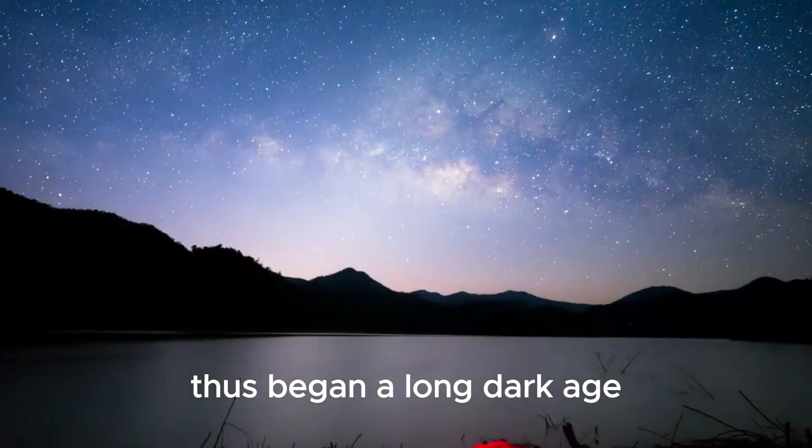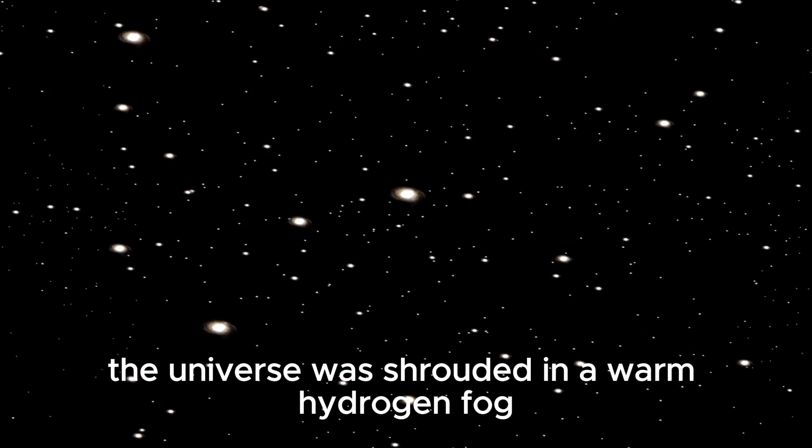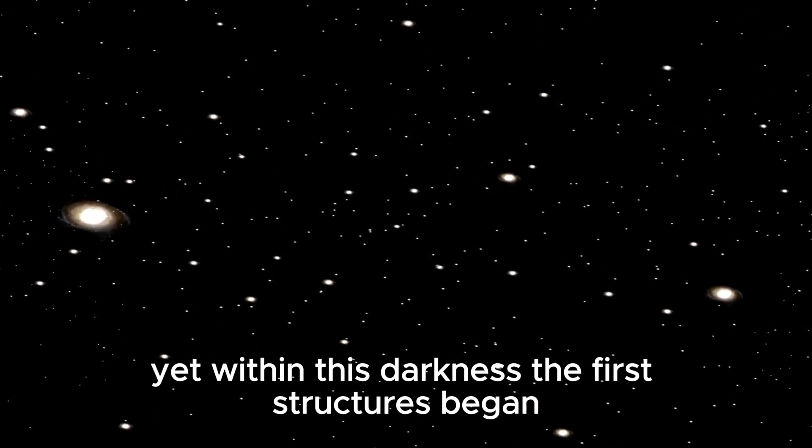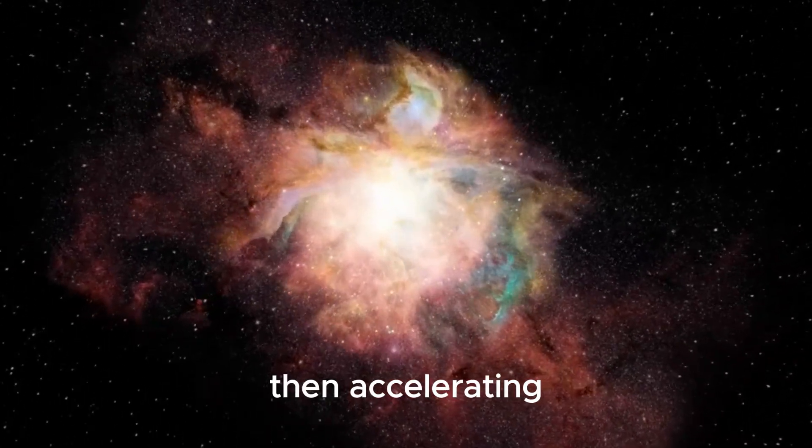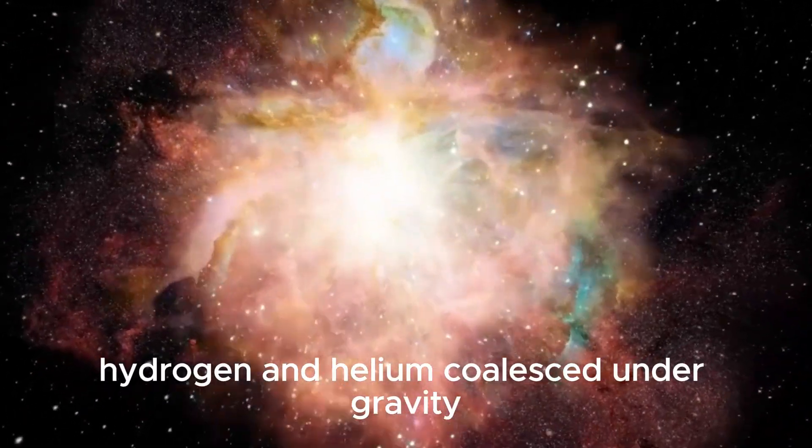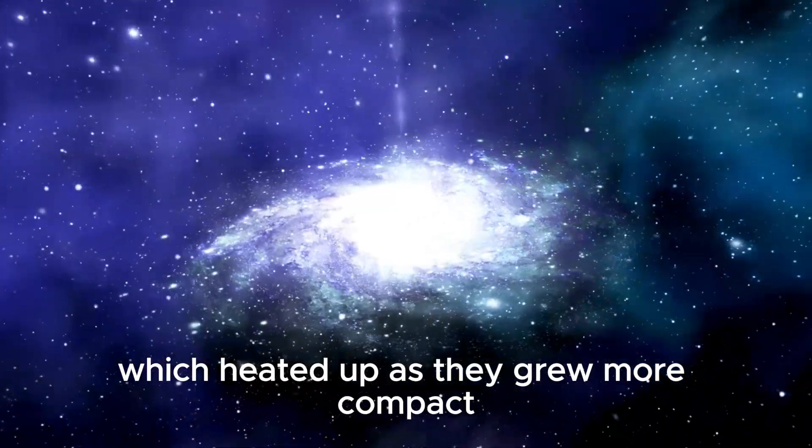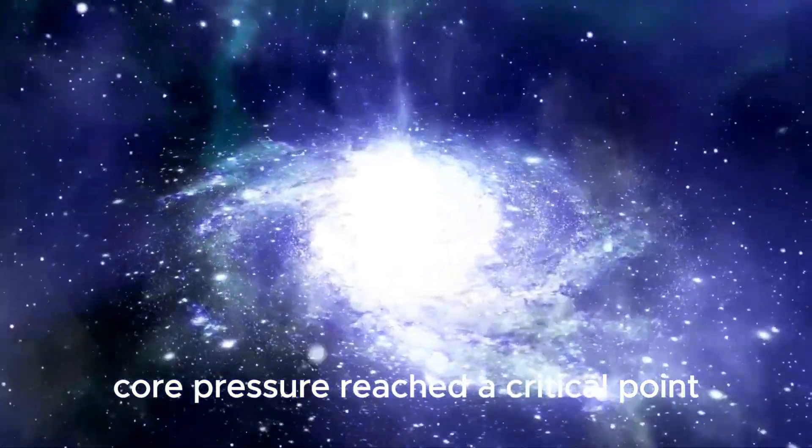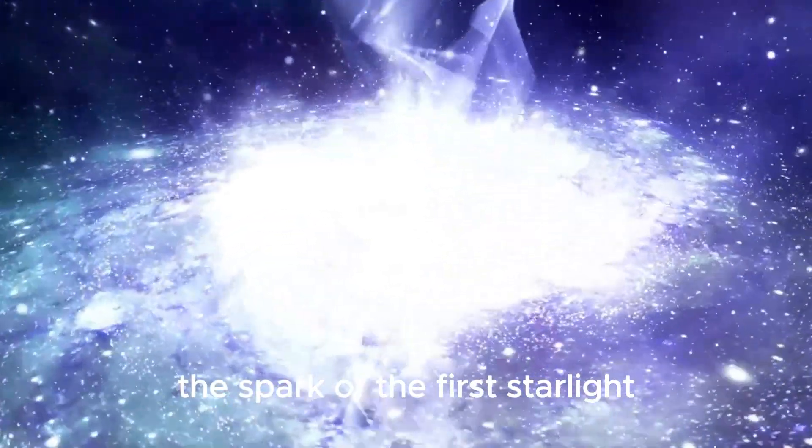Thus began a long dark age. Over hundreds of millions of years, the universe was shrouded in a warm hydrogen fog. Yet within this darkness, the first structures began to form, initially slowly, then accelerating. Hydrogen and helium coalesced under gravity into denser clouds, which heated up as they grew more compact. Eventually, in one such cloud's core, pressure reached a critical point, igniting a nuclear fire, the spark of the first starlight.